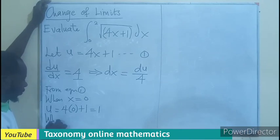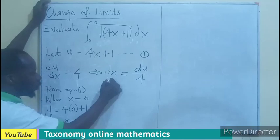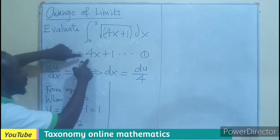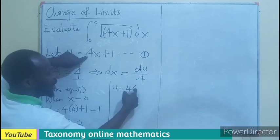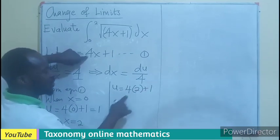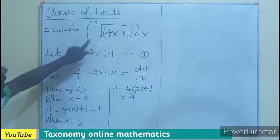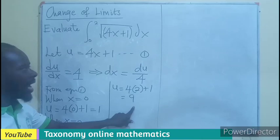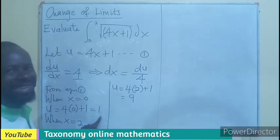Then, when X is now upper limit of 2, we can also say that from equation 1, U will be equal to 4X, which is now 2, plus 1. And that will give us 8 plus 1, that will be 9. So, it means the upper limit is now going to be 9, lower limit is going to be 1. So, now let's substitute.